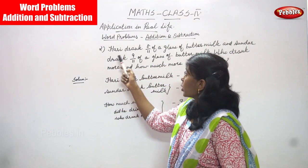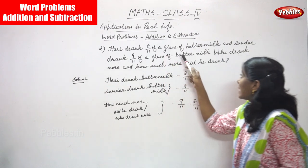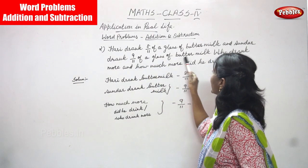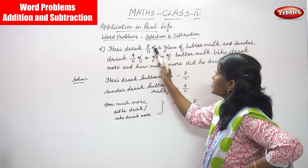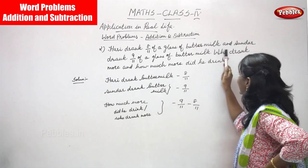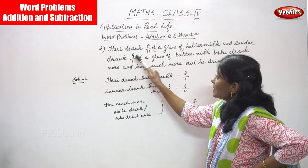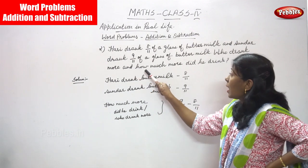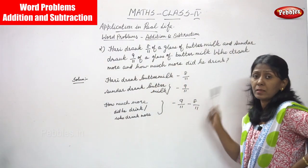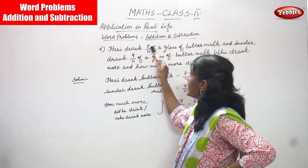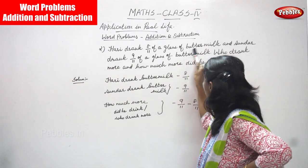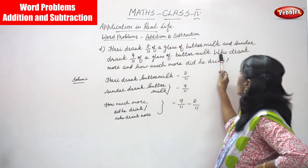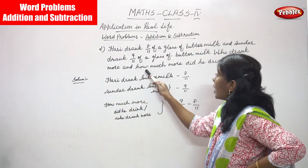Now we are going to solve the second problem. Hari drank eight by eleven of a glass of buttermilk and Sundar drank nine by eleven of a glass of buttermilk. Who drank more and how much more did he drink?